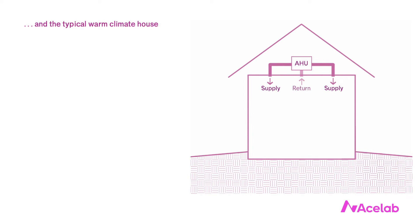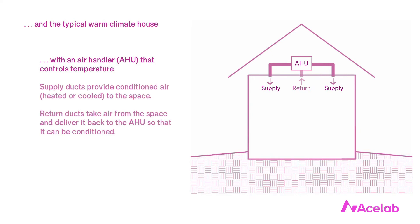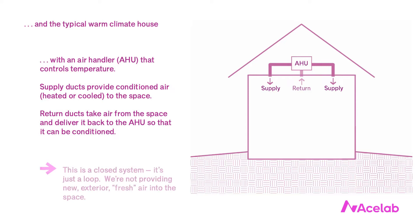Let's look at a single story warm climate house. We've got a similar setup: an air handler that controls temperature, supply ducts providing conditioned air to the space, and return ducts taking air back to the air handler to be conditioned. Just like our cold climate house, it's a closed system. One important difference though — the warm climate house has the air handler and the distribution system, the ducts, outside of the thermal enclosure. They're in the attic, which is usually vented, so they're effectively outside.